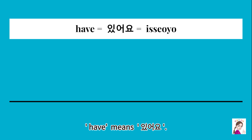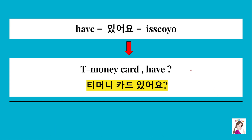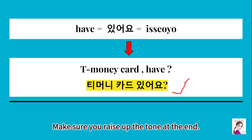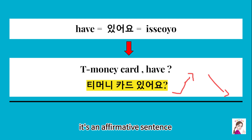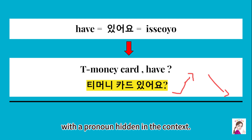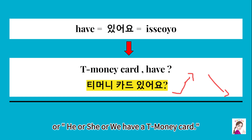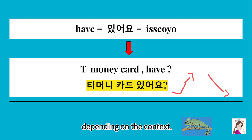'Have' means 있어요. So to say 'Do you have a T-money card?' you say: T-money card 있어요? One more time — T-money card 있어요? Make sure you raise up the tone at the end. If you tone down at the end, it becomes an affirmative sentence with a pronoun hidden in the context — so it means 'I have a T-money card,' or 'he, she, or we have a T-money card.' Korean changes like a chameleon depending on the context.